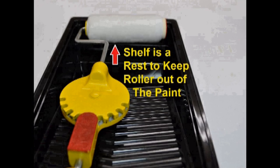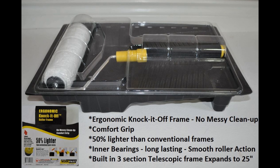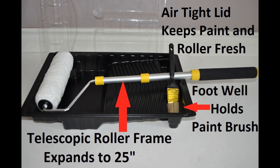We have two sizes, a 5 inch tray for our trim and edging kit. Our new 9 inch tray, the only one of its kind on the market, accommodates inside the tray a 9 inch 3 section telescopic roller frame that expands to 25 inches.